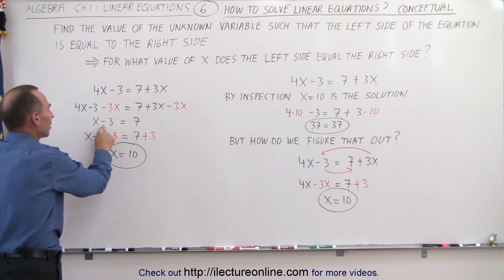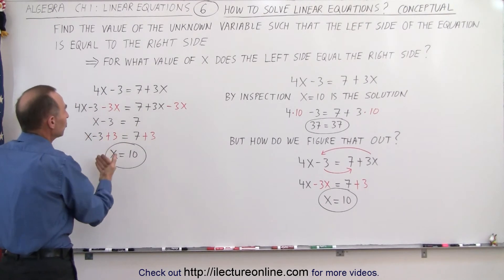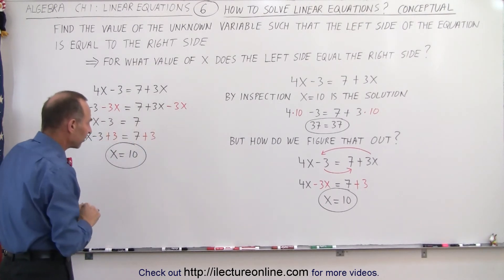Then we realize we have a minus 3 on the left side. We don't want it there, so we're going to add a plus 3 on the left side, which means we must add a plus 3 on the right side as well.